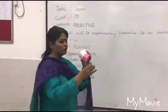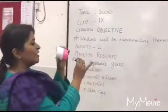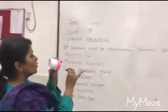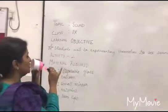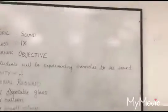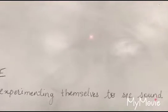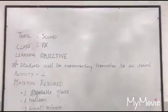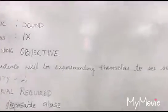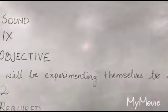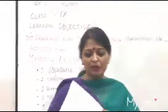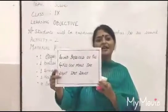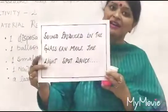I need to make a little adjustment for this. I need my camera lady to focus on the board so that she can see the spot. Yeah, here you can see that. See, when I am speaking, I can see that spot moving. So we can see that spot on the board which is dancing with my sound. Sound produced in the glass can make the light spot dance.